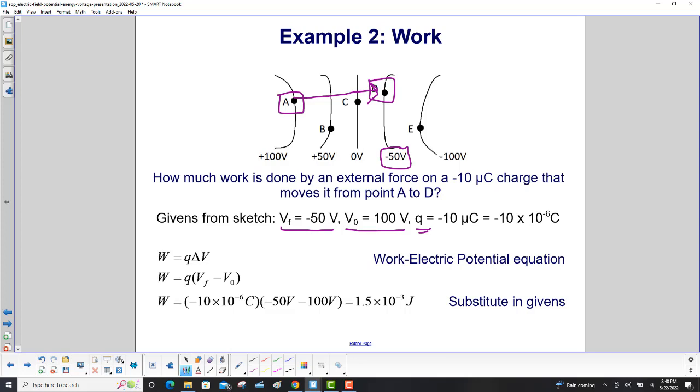Let's figure out the sign without doing any math yet. We're moving a negative charge in this direction. What's the direction of the electric field? The electric field points from high voltage to low voltage. So our electric field is going from left to right.